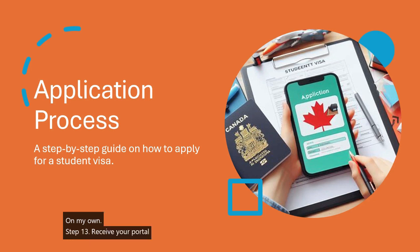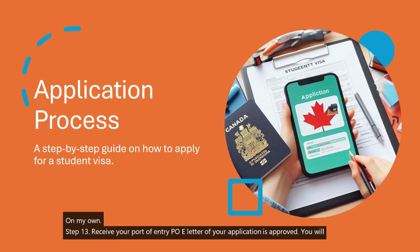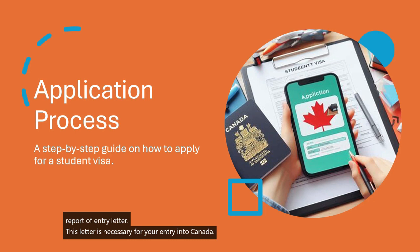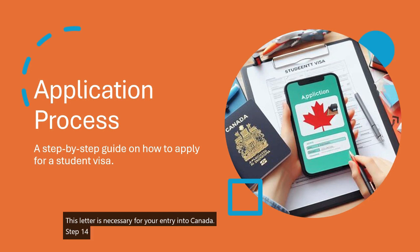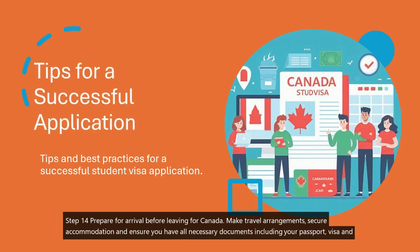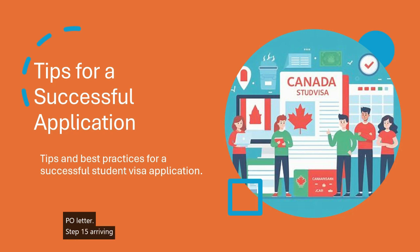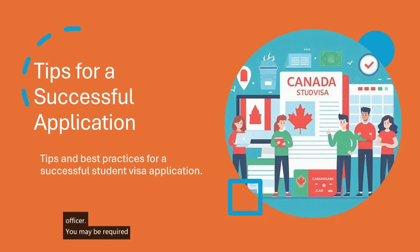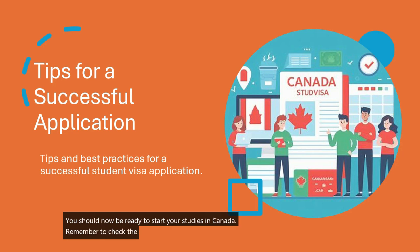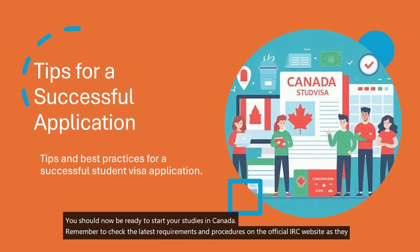Step 13 — Receive Your Port of Entry (POE) Letter: if your application is approved, you will receive a POE letter, which is necessary for your entry into Canada. Step 14 — Prepare for Arrival: before leaving for Canada, make travel arrangements, secure accommodation, and ensure you have all necessary documents, including your passport, visa, and POE letter. Step 15 — Arrive in Canada: when you arrive, present your POE letter to the immigration officer. You may be required to undergo a medical examination at this point. You should now be ready to start your studies in Canada. Remember to check the latest requirements and procedures on the official IRCC website as they may change over time.